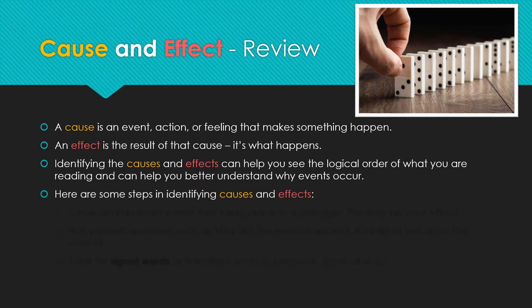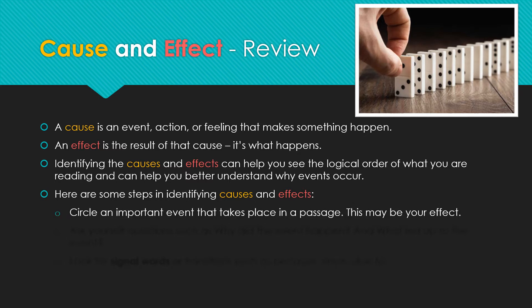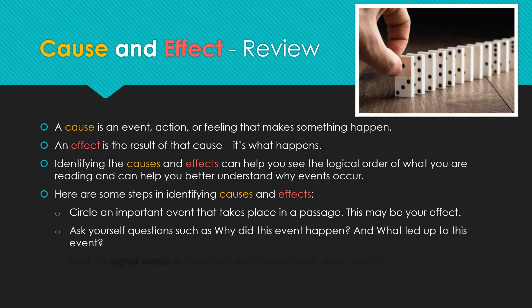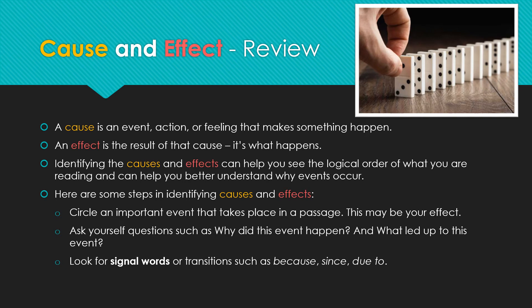Here are some steps in identifying causes and effects. Circle an important event that takes place in a passage — this may be your effect. Ask yourself questions such as: why did this event happen, and what led up to this event? Look for signal words or transitions such as because, since, and due to.